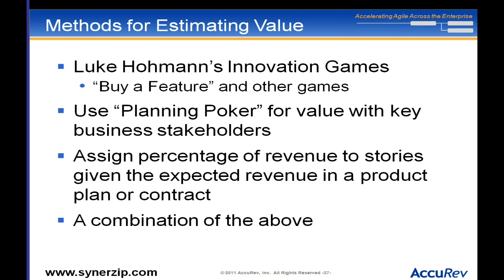Using that single assumption of product revenue over three years, you can calculate the value for any particular feature. That's another thing you can do. At the end of the day, the important point here is not the accuracy of estimating the value, but rather having a framework for saying: I'm going to get through these things as fast as I can with frequent releases, order them the best I can relatively speaking, and then whatever value you would have gotten, you'll get more of it faster.